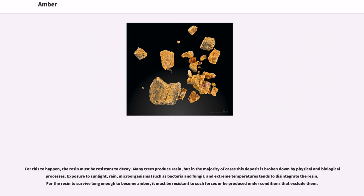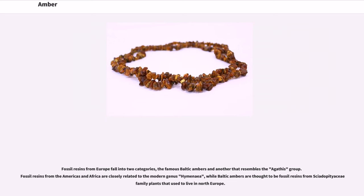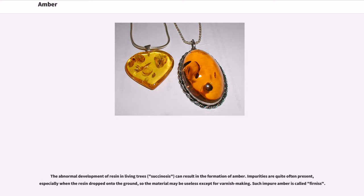For this to happen, the resin must be resistant to decay. Many trees produce resin, but in the majority of cases this deposit is broken down by physical and biological processes. Exposure to sunlight, rain, microorganisms such as bacteria and fungi, and extreme temperatures tends to disintegrate the resin. For the resin to survive long enough to become amber, it must be resistant to such forces or be produced under conditions that exclude them. Fossil resins from Europe fall into two categories: the famous Baltic ambers and another that resembles the agathis group. Fossil resins from the Americas and Africa are closely related to the modern genus Hymenaea, while Baltic ambers are thought to be fossil resins from Sciadopityaceae family plants that used to live in northern Europe. The abnormal development of resin in living trees, succinosis, can result in the formation of amber. Impurities are quite often present, especially when the resin dropped onto the ground, so the material may be useless except for varnish making. Such impure amber is called furnace amber.